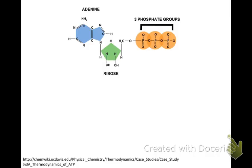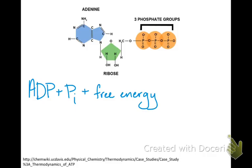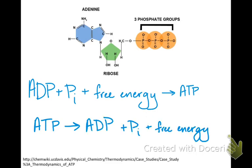Some of those steps convert energy into ATP. Adenosine diphosphate plus an inorganic phosphate, meaning it has no carbons attached to it, plus free energy from a catabolic process, can create ATP. On the flip side, ATP can be broken down into free energy, ADP, and an inorganic phosphate.